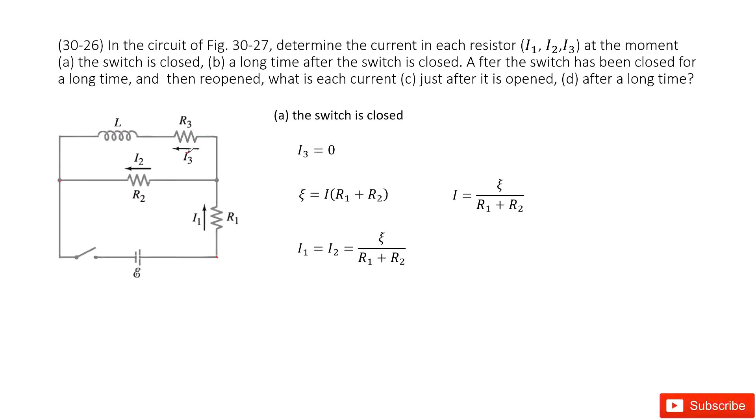So that means the current in I3 is zero. So this is first one we know. We can consider this branch is open. We don't consider it. Now you can see when the switch closed, we just have the battery R1 and R2. So this emf on the battery equals current times the total resistance R1 plus R2. Then we can get the current. And this current is just equal to I1 and I2.